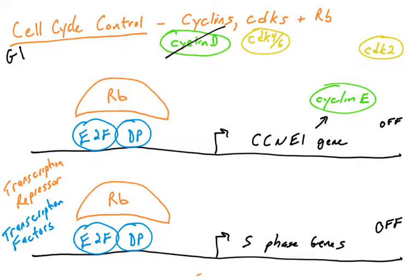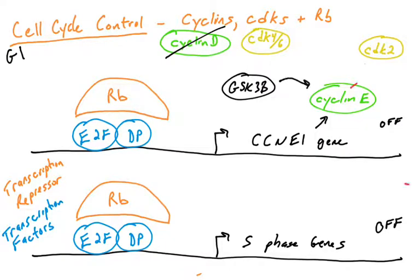But in G1, the levels of cyclin E are low. The RB repressor is binding to its transcription factors, keeping transcription low. There's another way that cyclin E levels are kept low in the cell: the kinase GSK3 beta, which is active in G1 phase, can phosphorylate cyclin E, allowing cyclin E to bind to a protein called CUL3, which is an E3 ubiquitin ligase.